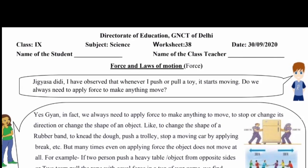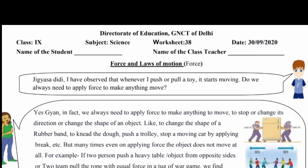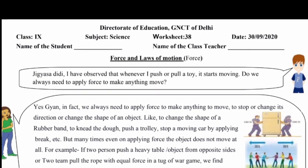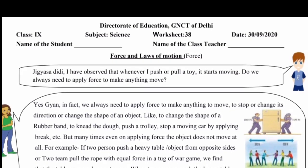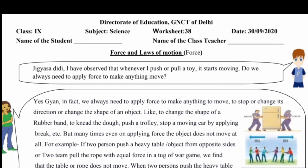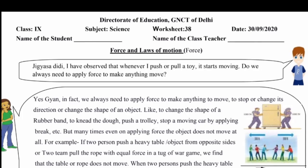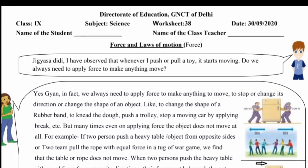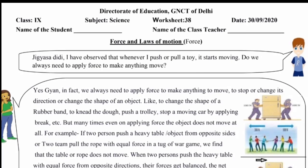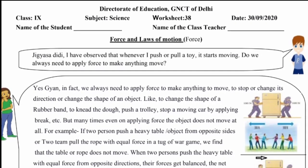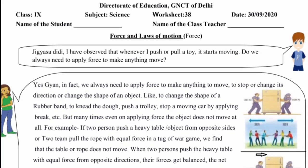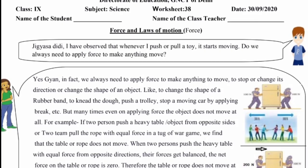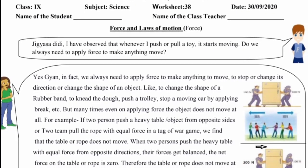Hello dear students, today we will discuss worksheet number 38, Science Class 9th: Force and Laws of Motion. I have observed that whenever I push or pull a toy it starts moving. We always need to apply force to make anything move, to stop it, change its direction, or change the shape of an object — like bending a rubber band, kneading dough, pushing a trolley, or stopping a moving car by applying brakes.